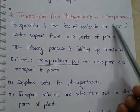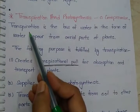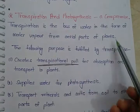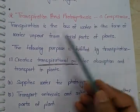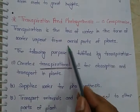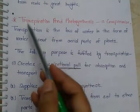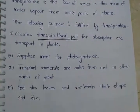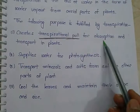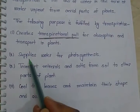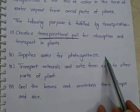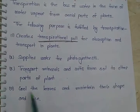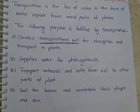Transpiration and photosynthesis are a compromise. Transpiration is the loss of water in the form of water vapor from the aerial part of the plant. Besides water loss, transpiration also creates transpirational pull for absorption and transport in plants, supplies water for photosynthesis, transports minerals and salts from soil to other parts of the plant, and cools the leaves and maintains their shape and size.